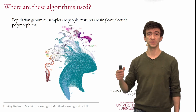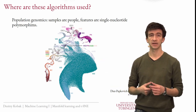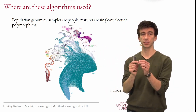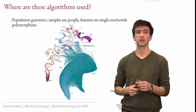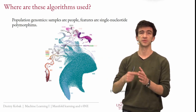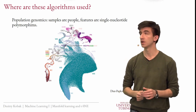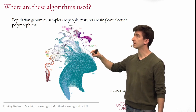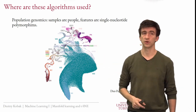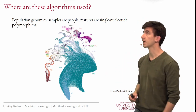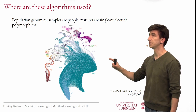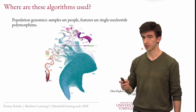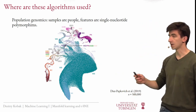Another example is population genetics, where samples are people and features are SNPs — single nucleotide polymorphisms — which tell you in which positions your genetic code differs from the average human genome. Every point in the visualization is a person, with color indicating ethnic origin of people from the UK. With something like half a million people depicted, one can see a lot of very meaningful structure appearing in this plot.